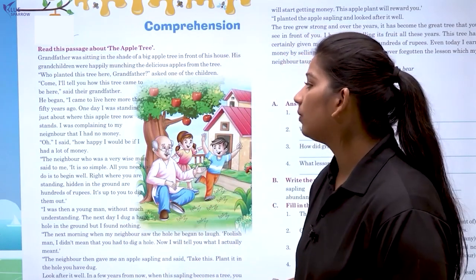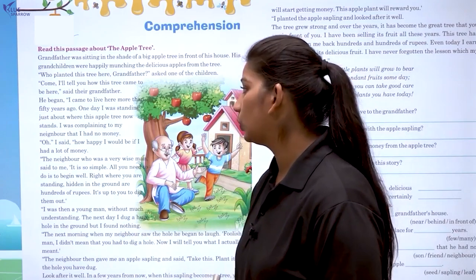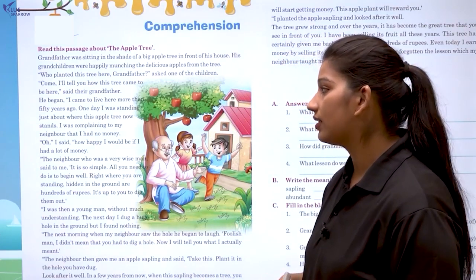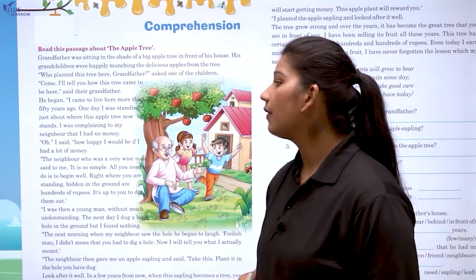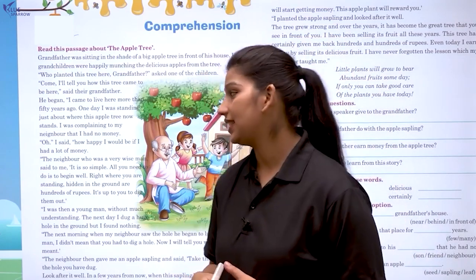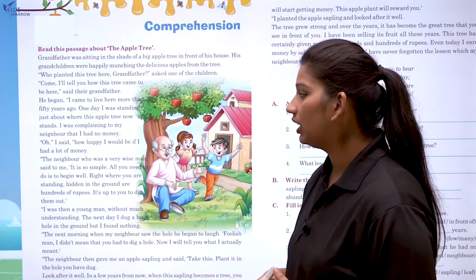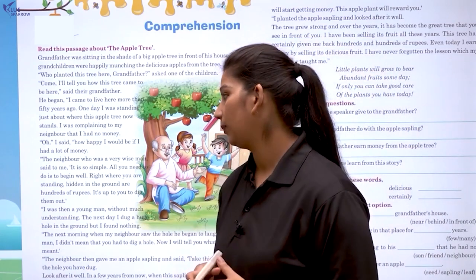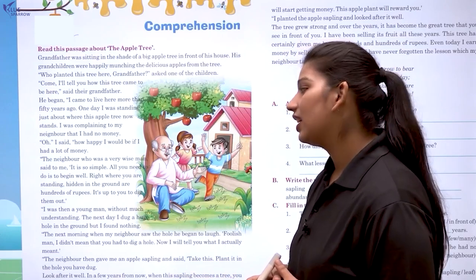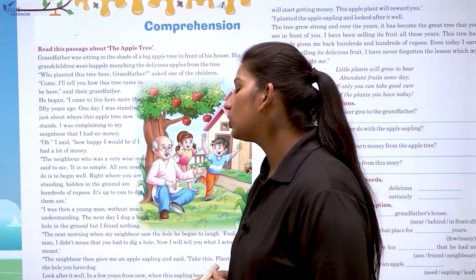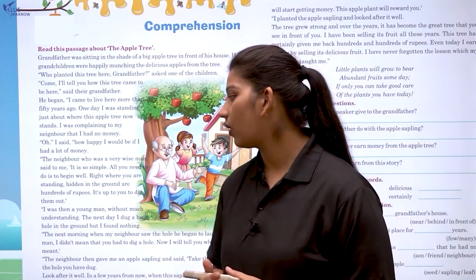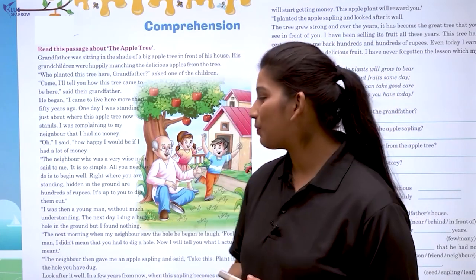He began: 'I came to live here more than 50 years ago. One day I was standing just about where this apple tree now stands. I was complaining to my neighbor that I had no money. I said, how happy I would be if I had a lot of money. The neighbor, who was a very wise man, said to me: it is so simple. All you need to do is to begin well. Right where you are standing, hidden in the ground are hundreds of rupees.'